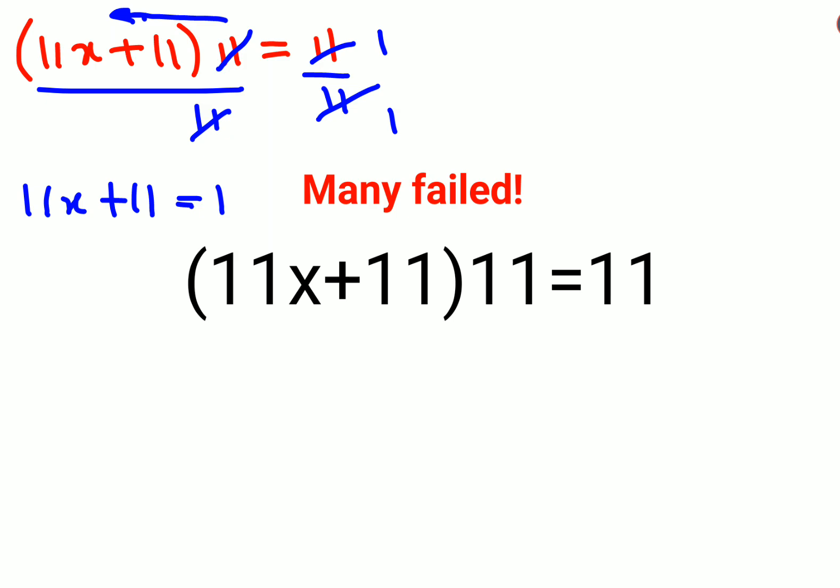So next what we can do in this case is we will subtract both sides by 11. So what we are getting is 11x equals to 1 minus 11. See, understand the operation what you will do is subtraction, but the sign will always be of the bigger number. So we have 11 which is negative, so answer will be negative 10.